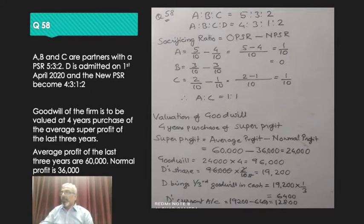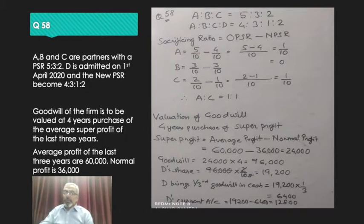Similarly for B there is no sacrifice because the old ratio was also 3/10 and the new ratio is also 3/10 — no sacrificing. For C, the sacrifice is 2/10 minus 1/10, therefore 1/10. Therefore A and C are both sacrificing equally, ratio 1:1.